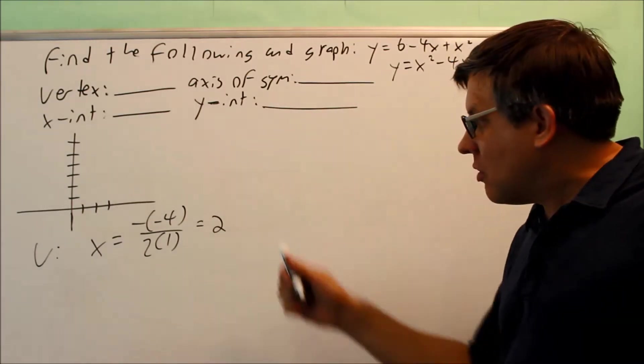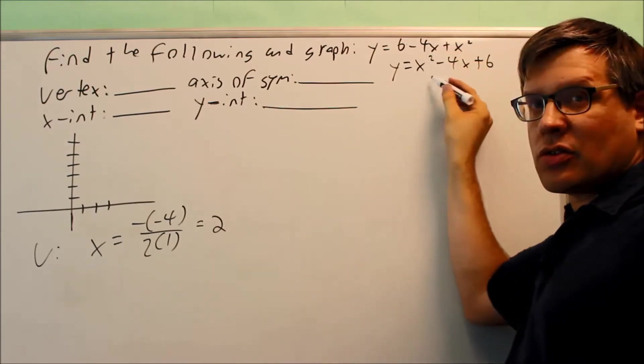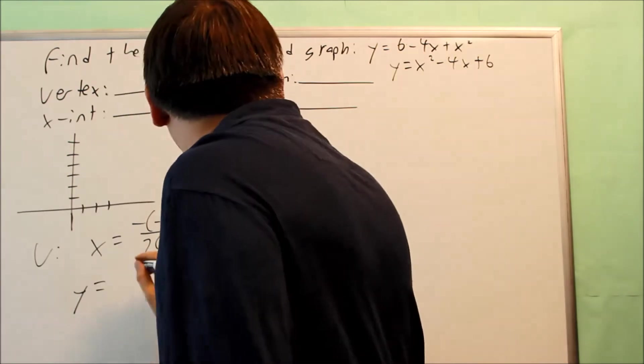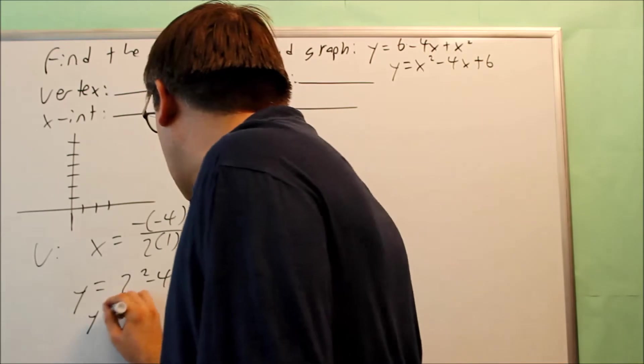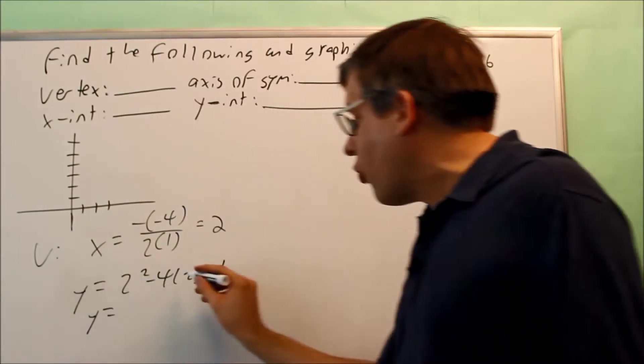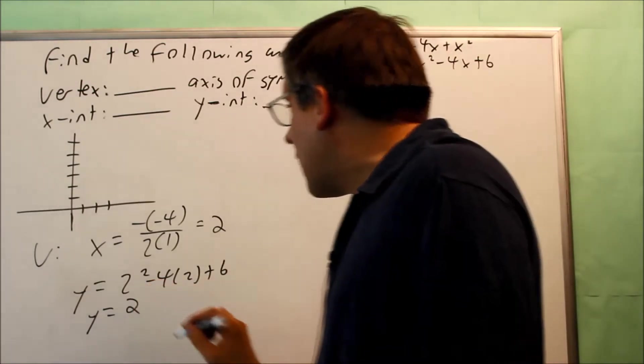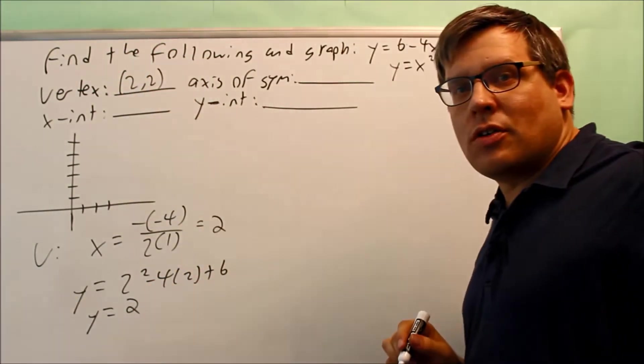You want to find the y value also. So 2 has to go back in. Now in this case you could use either one, but I'll just use the second one. So y equals 2 squared minus 4 times 2 plus 6. And that's going to give us 4 minus 8, negative 4 plus 6 is going to be positive 2. So now I know that my vertex is going to be 2, 2.